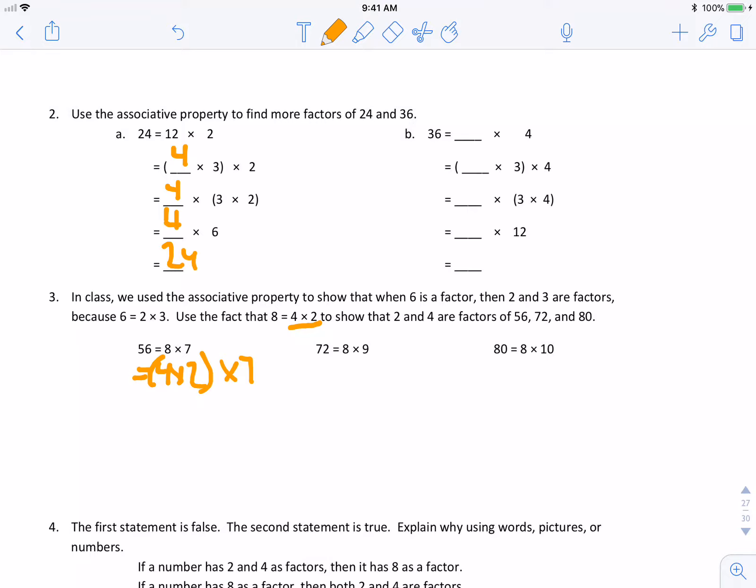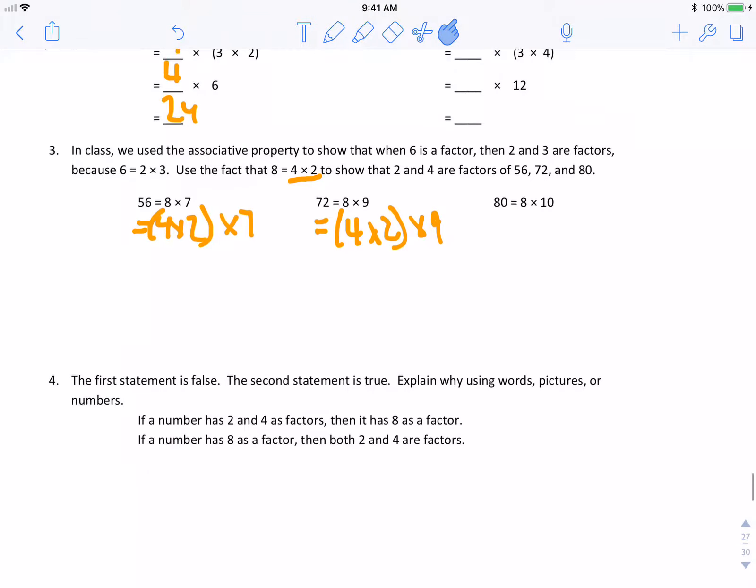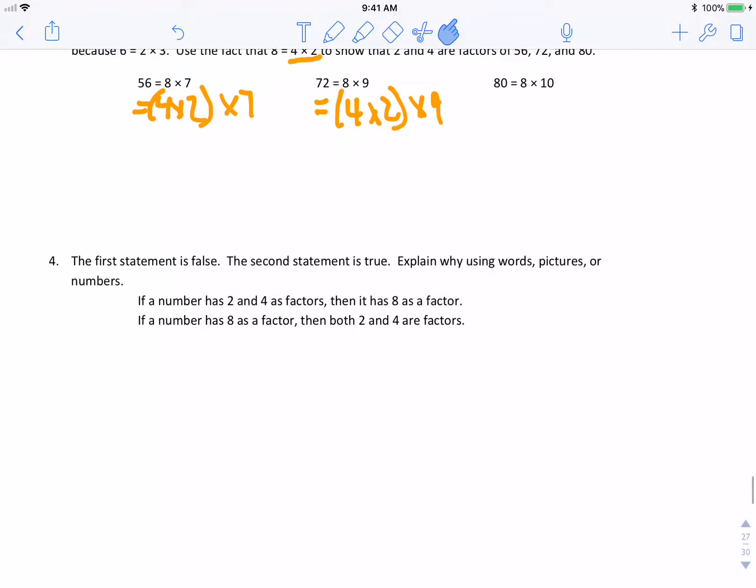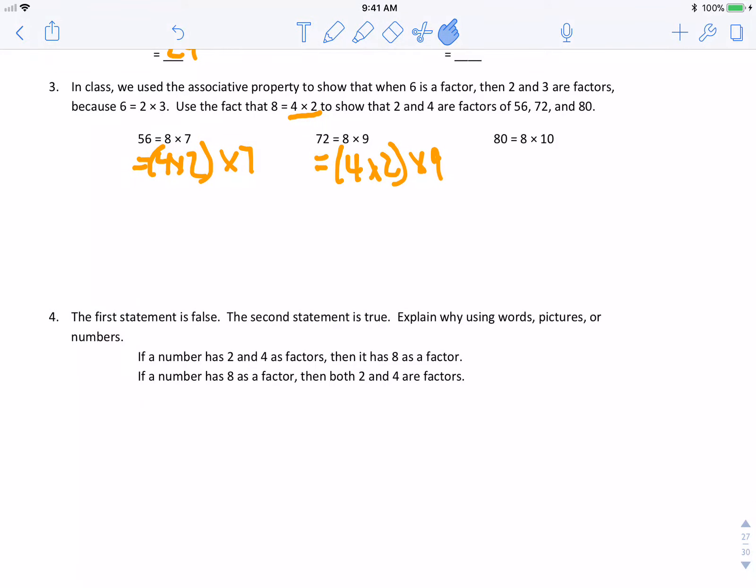So, the goal is to show 4 times 2. So, when you solve this, you're going to do the associative property 4 times 2 to replace your 8 times 7. Now, go ahead and work to solve each of these problems. Remember, you're going to replace all of the 8s with 4 times 2. And that is it. That's a wrap.